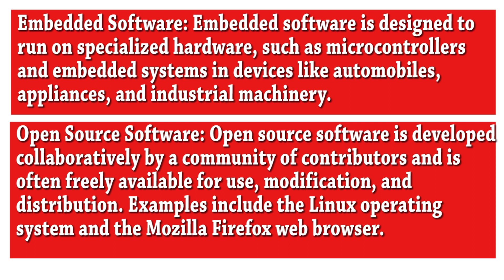Embedded software runs on embedded systems in devices like automobiles, appliances, and industrial machinery. Open source software is developed collaboratively by a community of contributors and is often freely available for use, modification, and distribution. Examples include the Linux operating system and the Mozilla Firefox web browser.